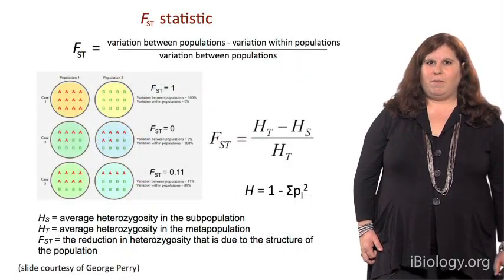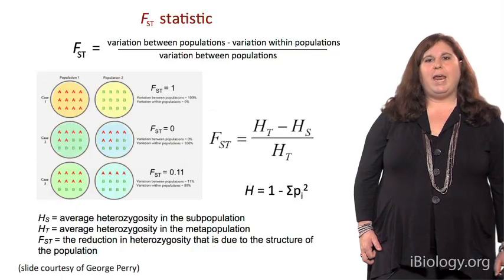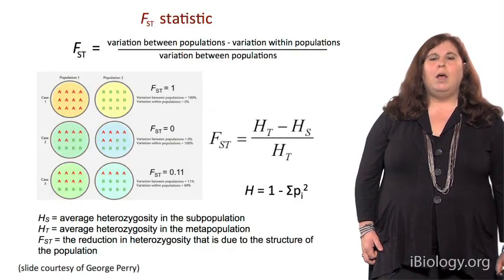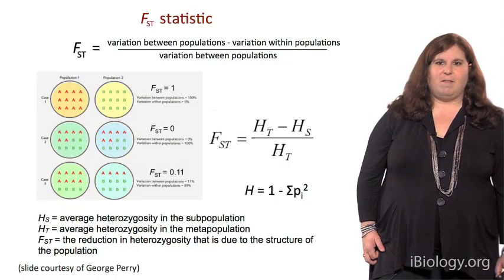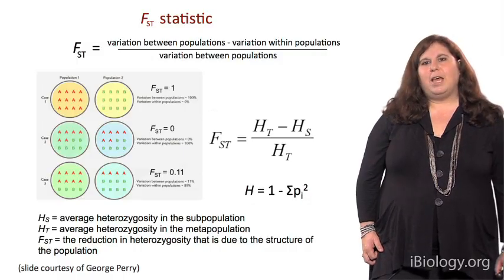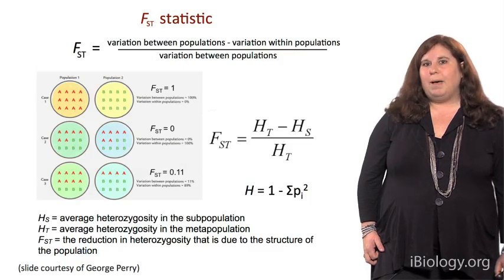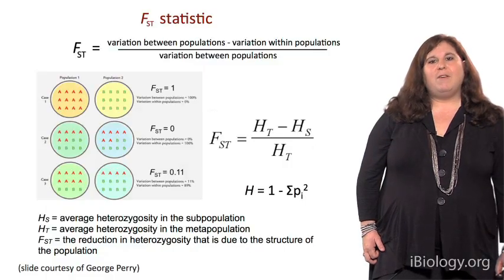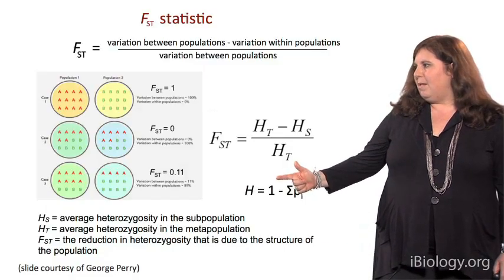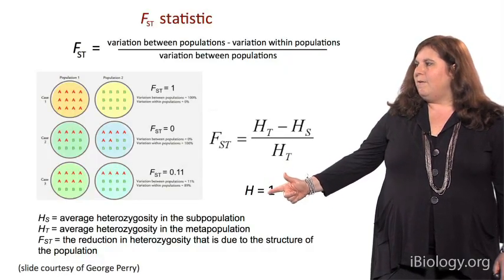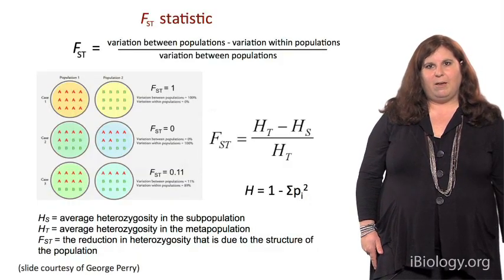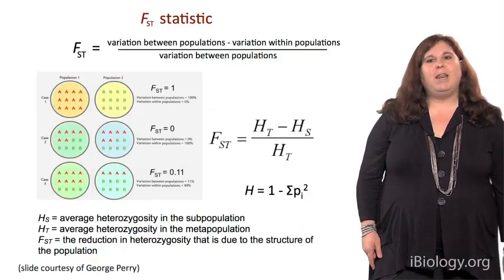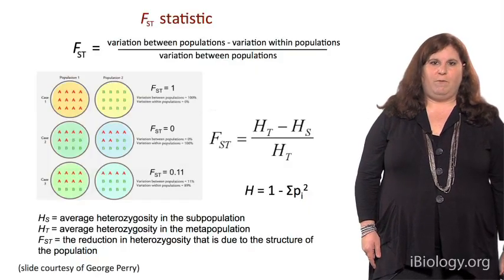Now I want to introduce a statistic that we typically use to look at how much variation there is among populations. This is referred to as an FST statistic, and it's simply looking at the proportion of genetic variation that is within populations relative to that which is between populations. FST can be measured based on heterozygosity, which is a measure of genetic variation calculated as 1 minus the sum of the allele frequencies squared.